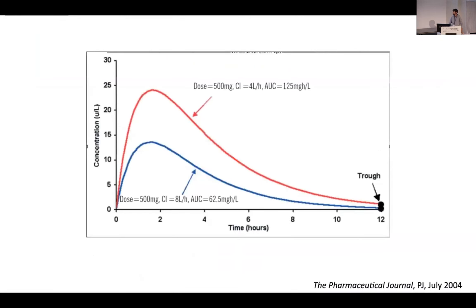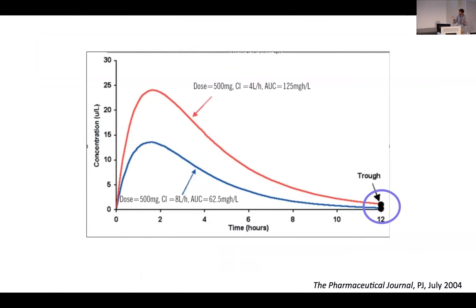Why does sampling matter? Because for a given patient, if you have only a concentration at 12 hours, you can have very different PK profiles before that point. If you don't have any samples before 12 hours, you cannot appreciate the full PK profile of that patient. So the samples are very, very important.